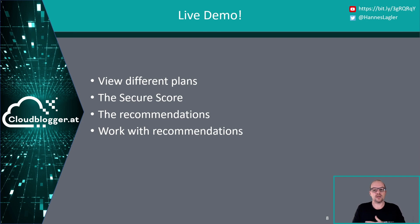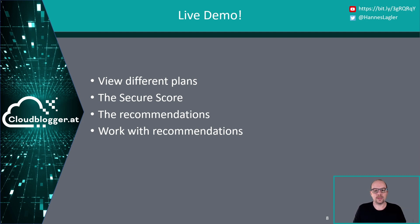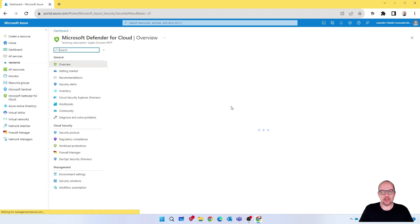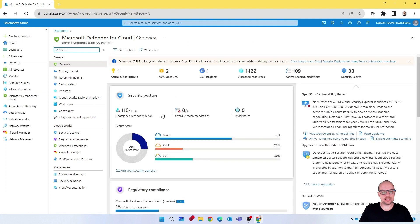In the live demo, I'll demonstrate how to find the different plans and what's included. I'll also show you the Secure Score itself, the recommendations, how to work with recommendations, assign them to a user, apply a fix, and so on. Here we are in the live demo section. You can see I have Microsoft Defender for Cloud open on the overview pane, with my three connected environments: Azure, AWS, GCP, and an on-premise environment.